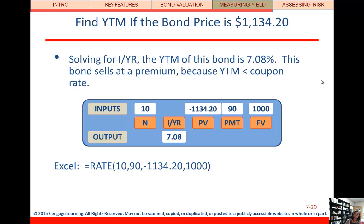Now, if it's a premium bond and the bond price is $1,134.20, we just change the present value to $1,134.20, compute the interest rate, and we get 7.08%. This is the same concept as before when we were solving for bond price, but now we're solving for interest rate. We're seeing that same phenomenon: if the interest rate goes up, bond prices go down, and here it's going down relative to the coupon rate.